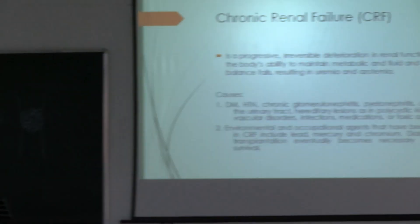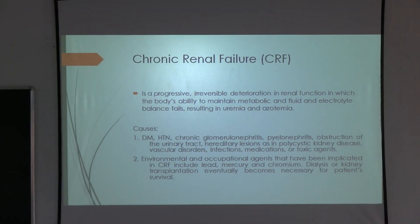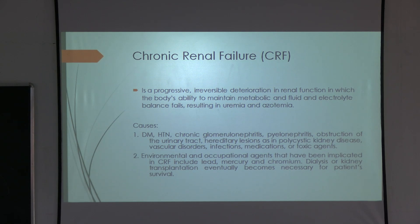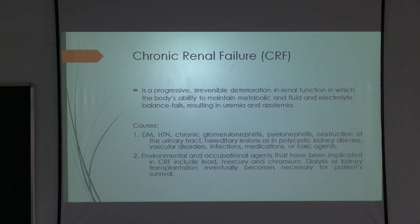Chronic renal failure is a progressive, irreversible deterioration in renal function in which the body's ability to maintain metabolic and fluid-electrolyte balance fails, resulting in uremia and azotemia. Causes include diabetes, hypertension, chronic glomerulonephritis, obstruction of the urinary tract, and hereditary lesions like polycystic kidney disease. Diabetic nephropathy is a very important cause. These are chronic diseases causing irreversible renal failure.